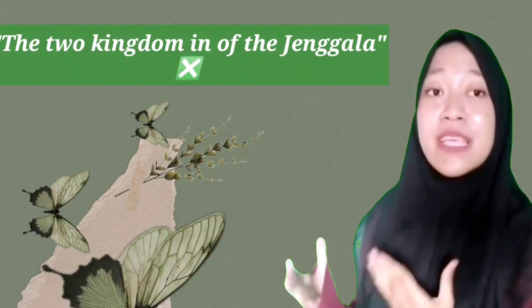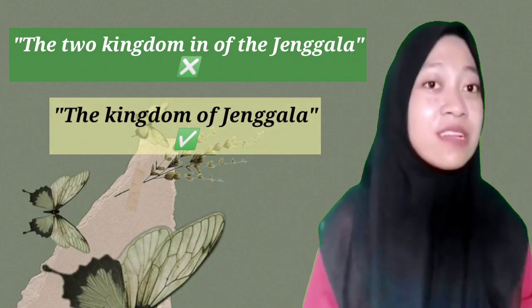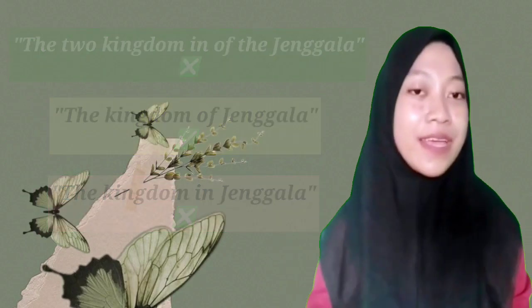For the sentence 'the two kingdoms in of the Jenggala,' it should be 'the kingdom of Jenggala,' not 'the kingdom in Jenggala.' Why? Because the purpose is to express ownership or possession — 'Jenggala' is a word that describes possession of the kingdom. So the preposition 'in' is not appropriate in this context, and we have to use the preposition 'of' in the sentence.